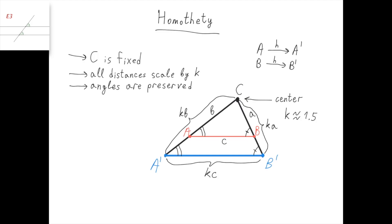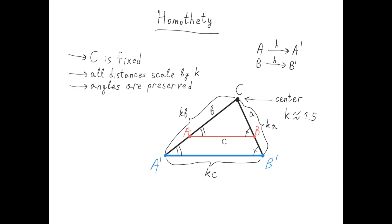A consequence of that last property is that all lines get transformed into parallel lines. For example, in this case, segment ab got transformed into a prime b prime, and ab is parallel to a prime b prime, because this angle equals this angle. Now in this case, I chose k to be approximately 1.5, and so if this length is a, then this length is approximately 1.5 times a, and this length is approximately half of a, so that 1a plus one-half a becomes 1.5 times a.